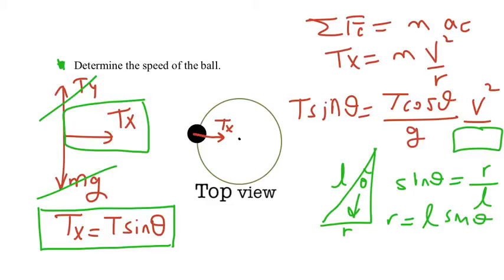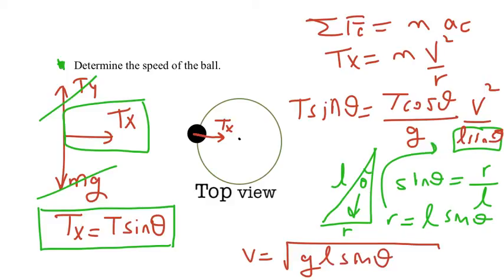Let's plug it in here. And if you put it right there, L sin theta. And from here, we can figure out the speed. And speed is going to become square root of G times L times sin theta tangent theta. This is the solution.